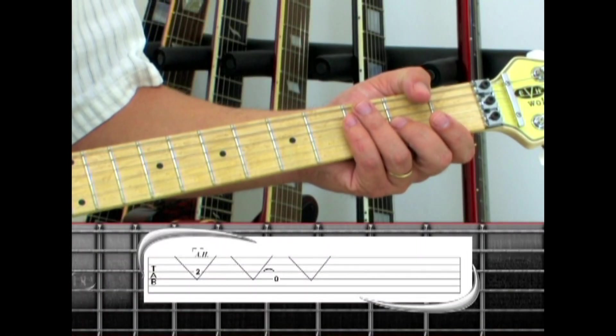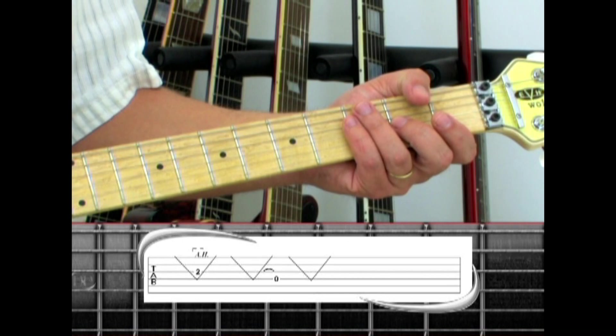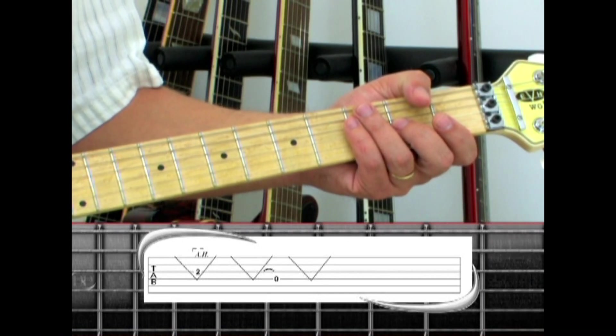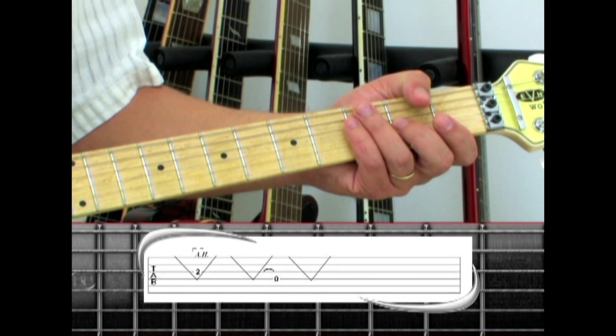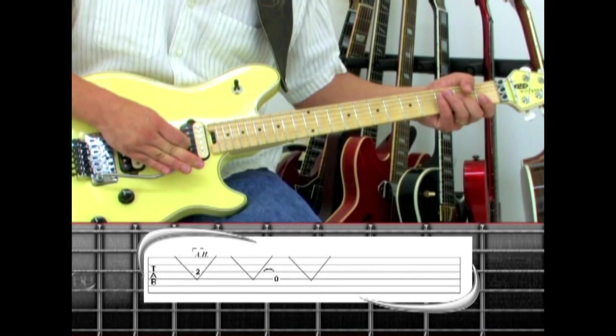The second half plays a third string second fret artificial harmonic while the bar is down. Sound the note, return the bar, then dive and return, pull off to open, dive and return.